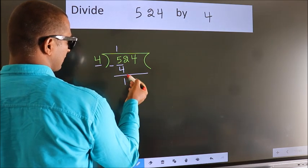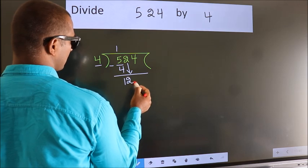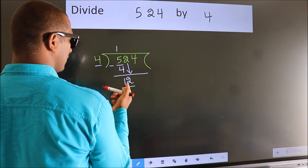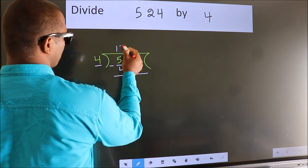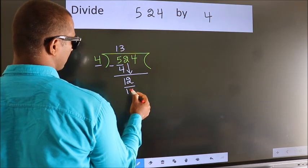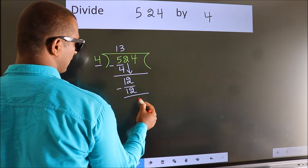After this, bring down the beside number. So 2 down, giving us 12. When do we get 12 in the 4 times table? 4 threes is 12. Now we subtract. We get 0.